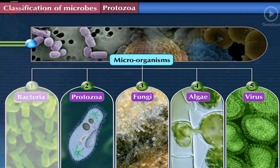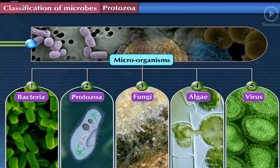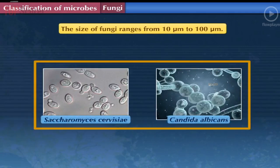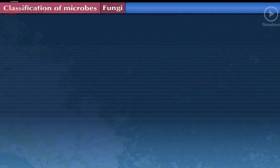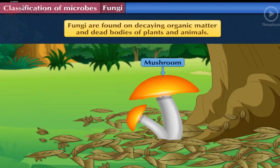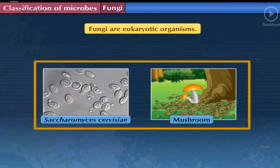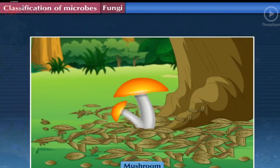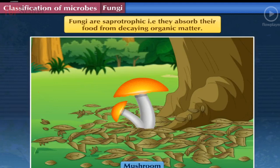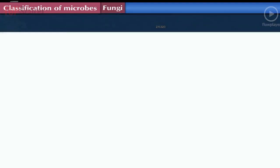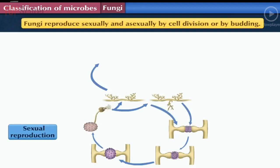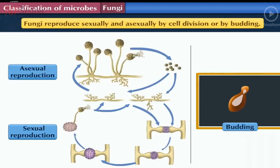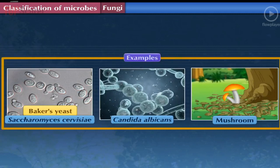Fungi (as microbes): The size of fungi ranges from 10 micrometers to 100 micrometers. Fungi are found on decaying organic matter and dead bodies of plants and animals. They are eukaryotic organisms — some are unicellular (e.g., Saccharomyces cerevisiae) and others are visible with the naked eye (e.g., mushrooms). These organisms are saprotrophic, absorbing food from decaying organic matter. They reproduce sexually and asexually by cell division or by budding. Examples include baker's yeast, Candida, and mushrooms.